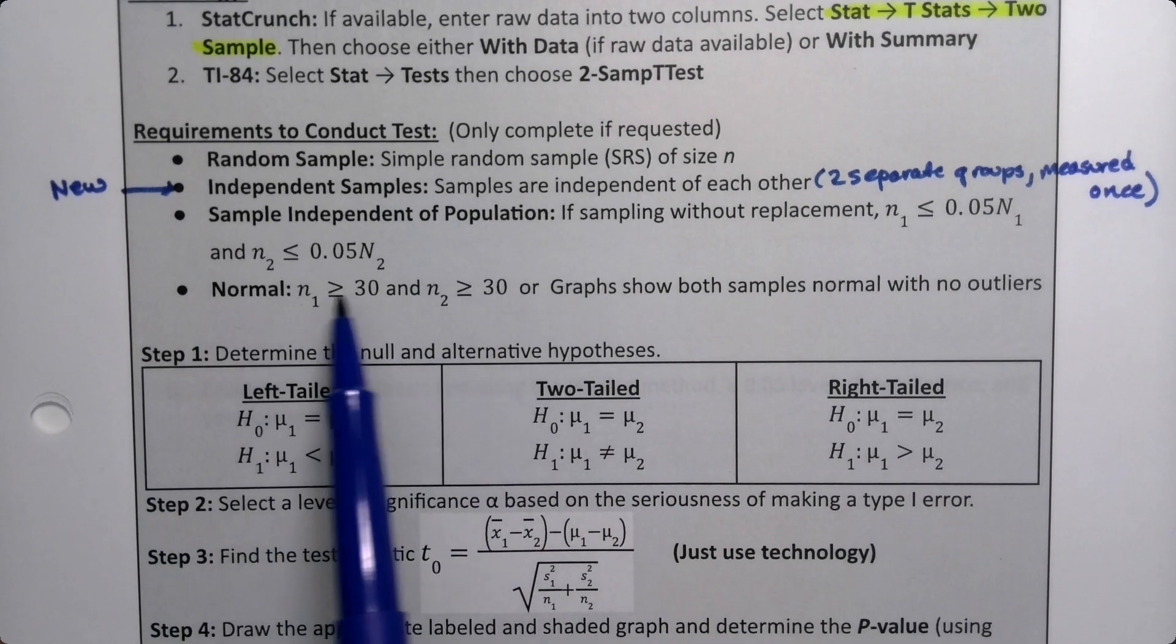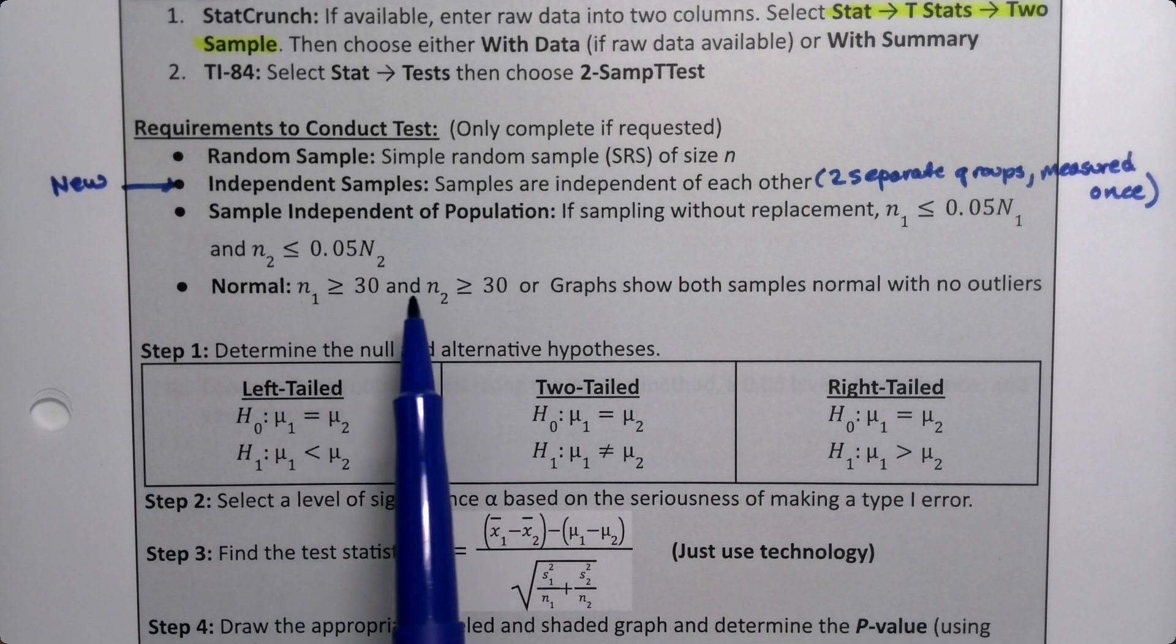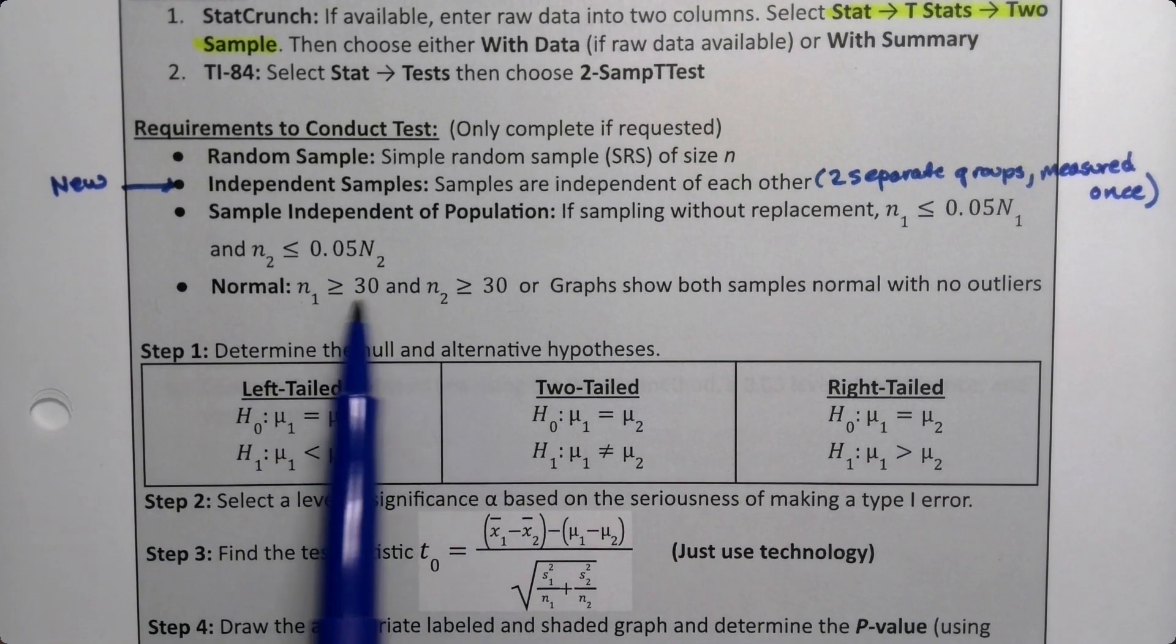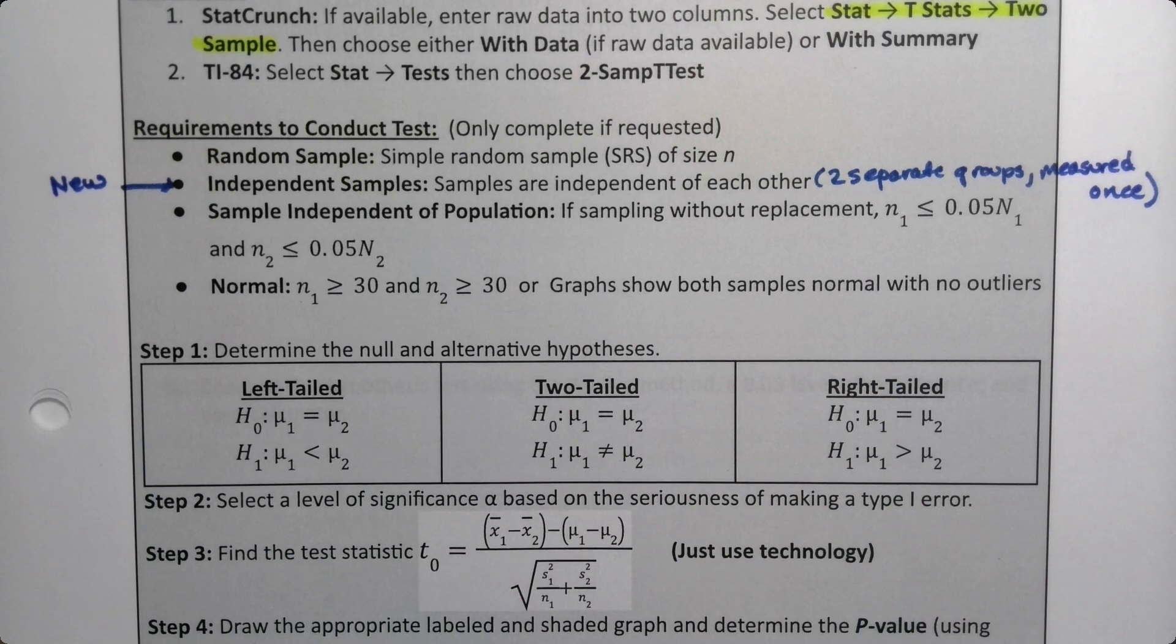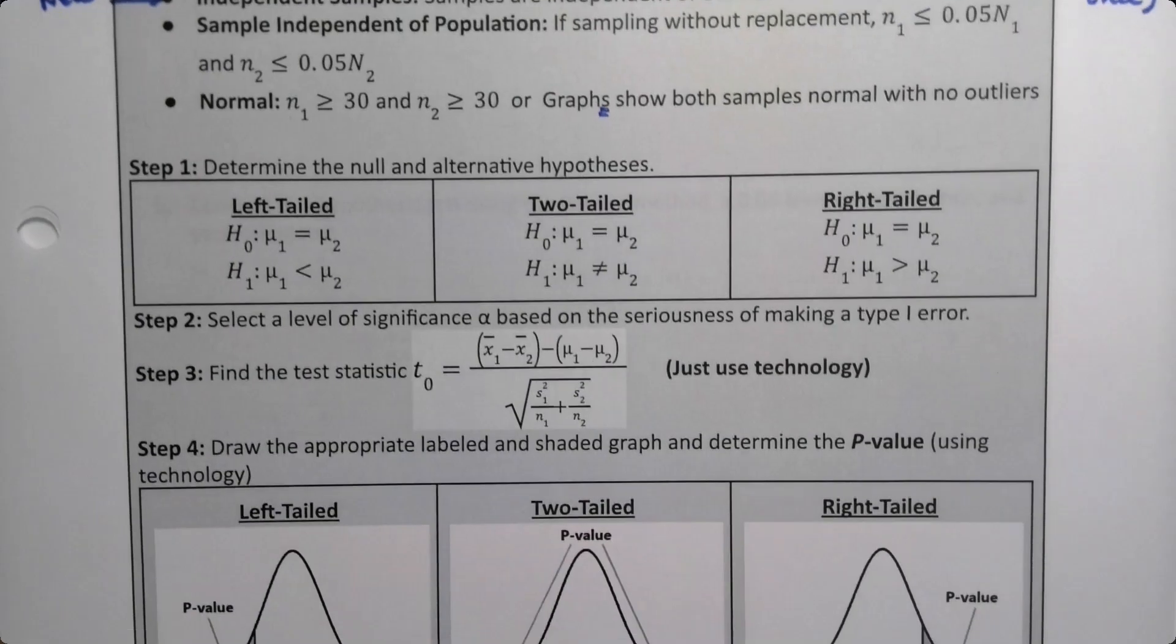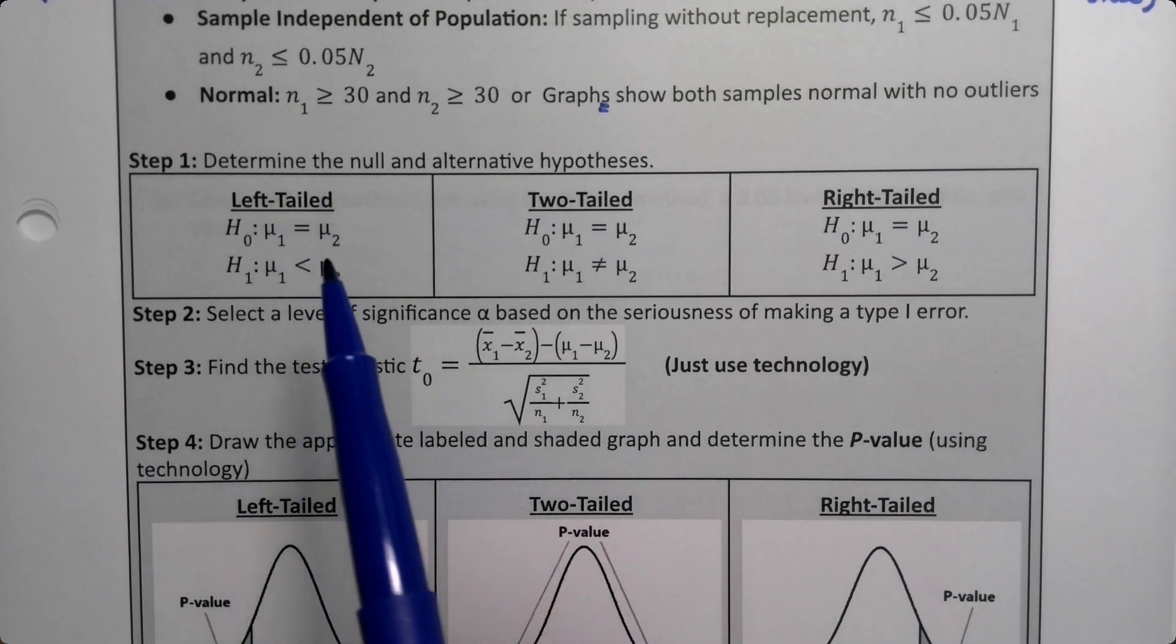Then we have to do normal twice. If we have to do it from n greater than 30, but they will also give us two graphs if we're having to do it from the graph, so there have to be graphs plural, two of them.